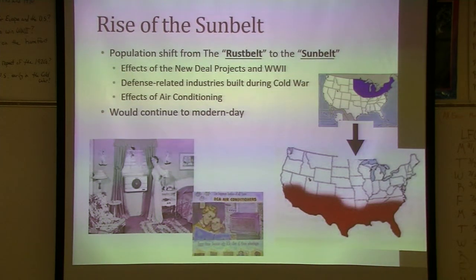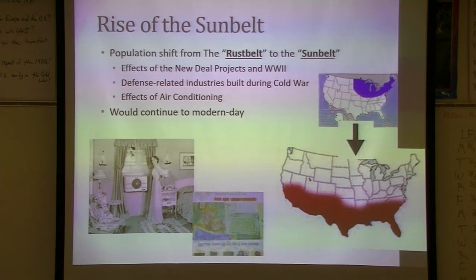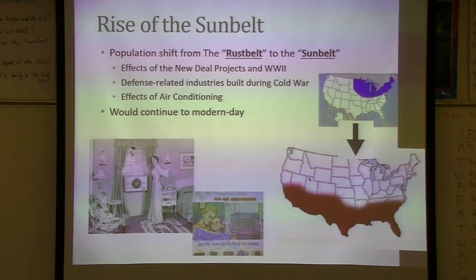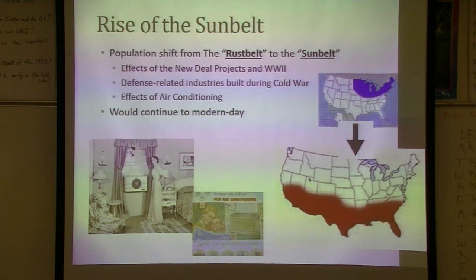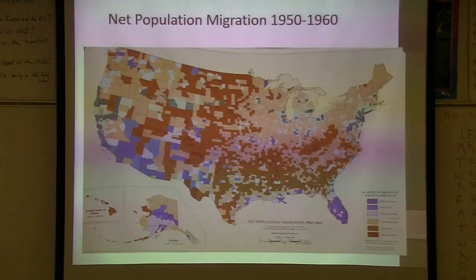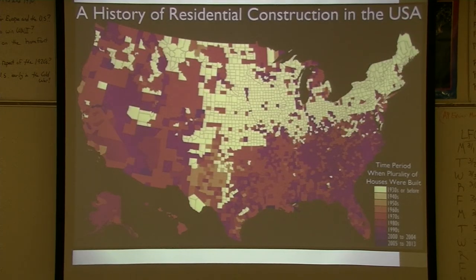Some states more so than others — right now California's not really growing, but we have huge growth in North Carolina, Georgia, and Virginia. Part of that is the shift of industries, part is the effects of New Deal projects, and a big thing is air conditioning. Can you imagine living in Florida, Arizona, or Southern California without air conditioning? This map is showing for the 50s the biggest growth areas — you notice how much for Florida, California, and Arizona there are as massive growing areas.